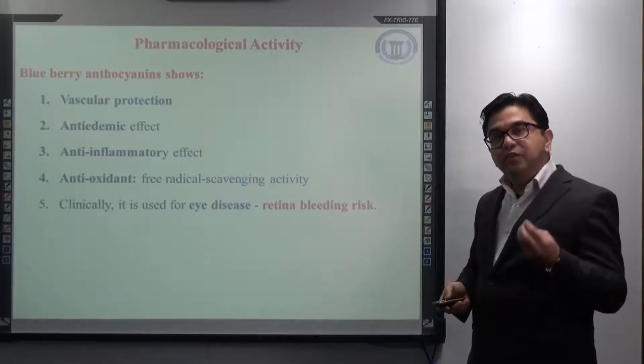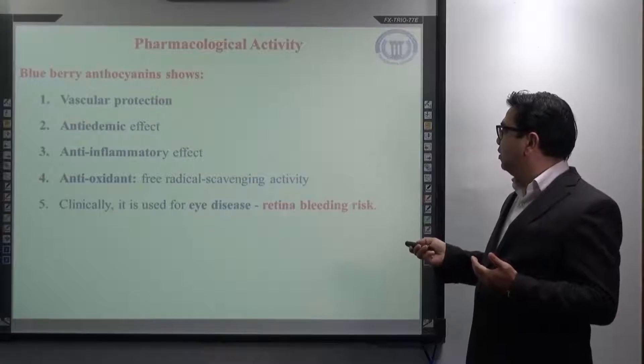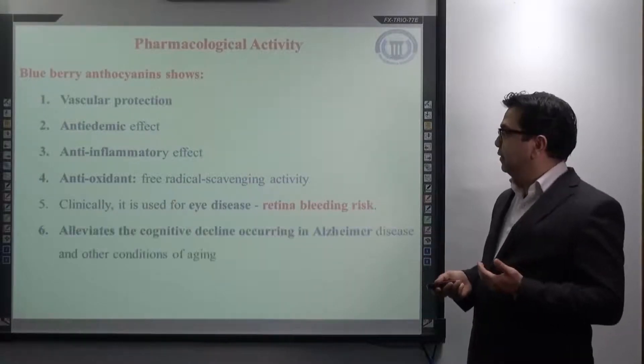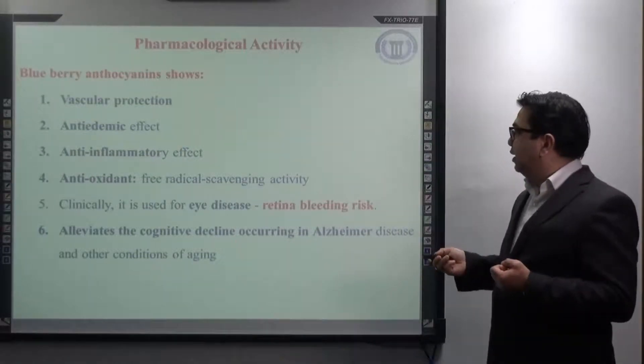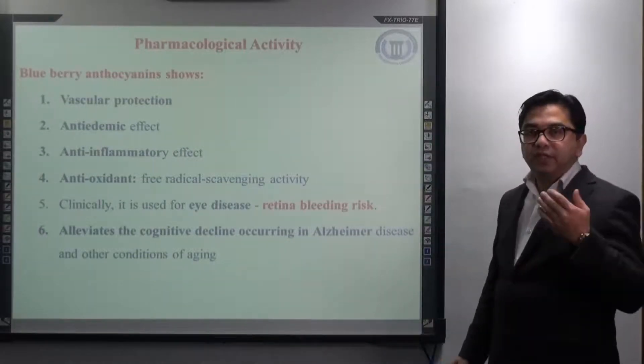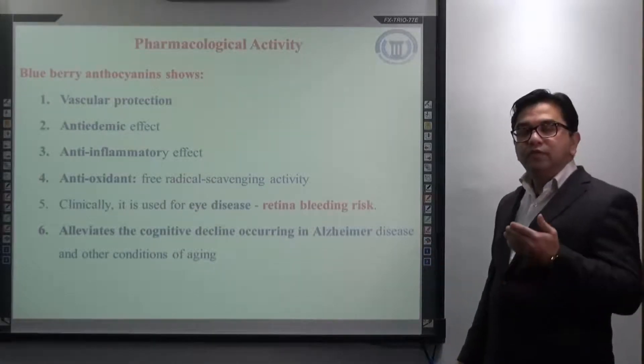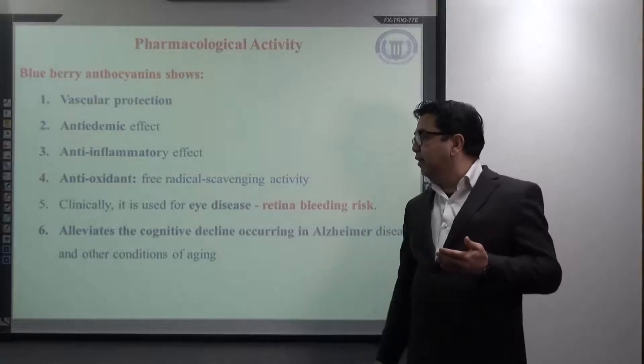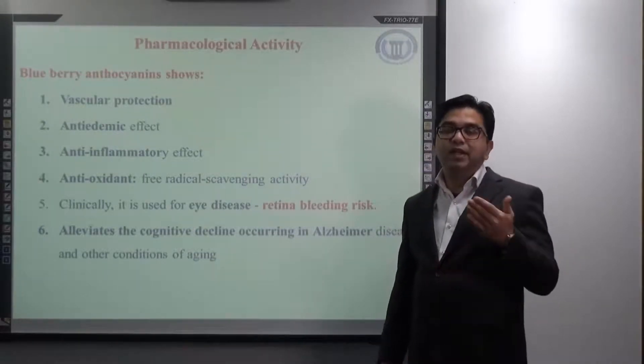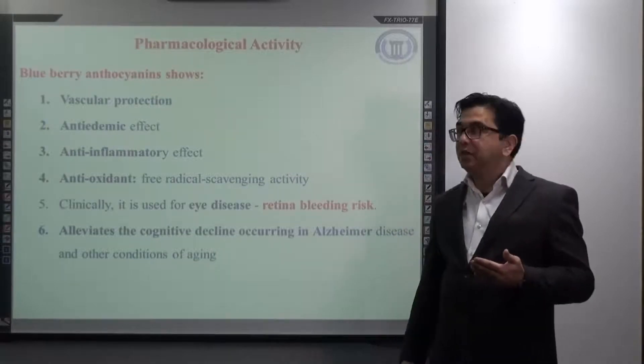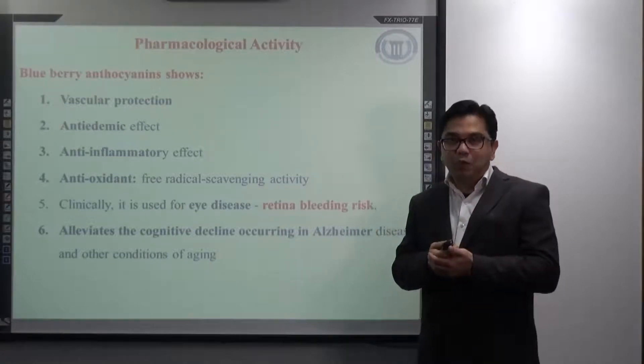Clinically, it is also used for eye diseases like in the case of retina bleeding risk. It is also found to alleviate the cognitive decline that is mainly associated with Alzheimer's disease. It is also found to improve the cognitive decline in other conditions like aging of patients or age-related cognitive decline. For students, I would like to suggest take a lot of blueberries. It will improve your memory.